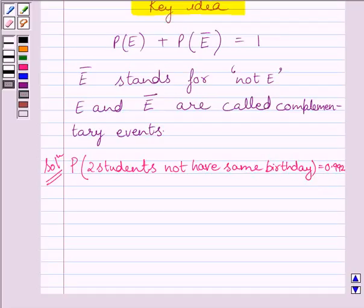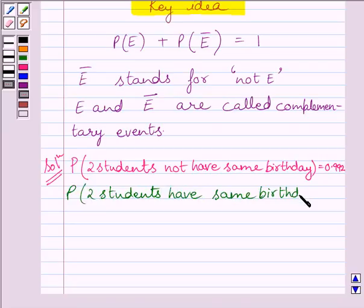Now we have to find the probability of the two students having the same birthday. Clearly we can see these two are complementary events, and the sum of probabilities of two complementary events is equal to 1.